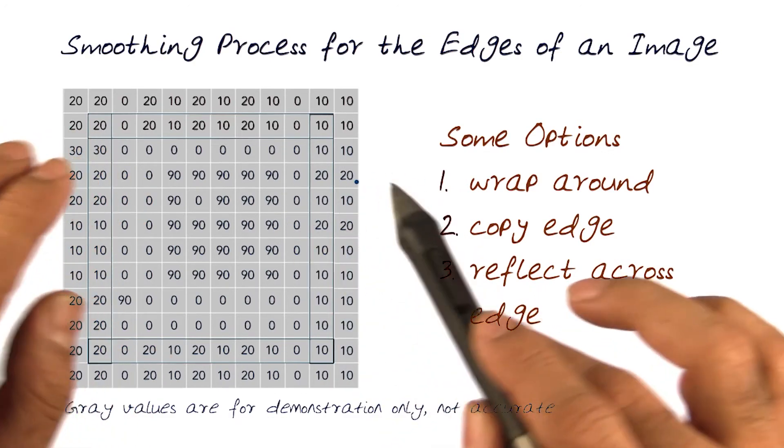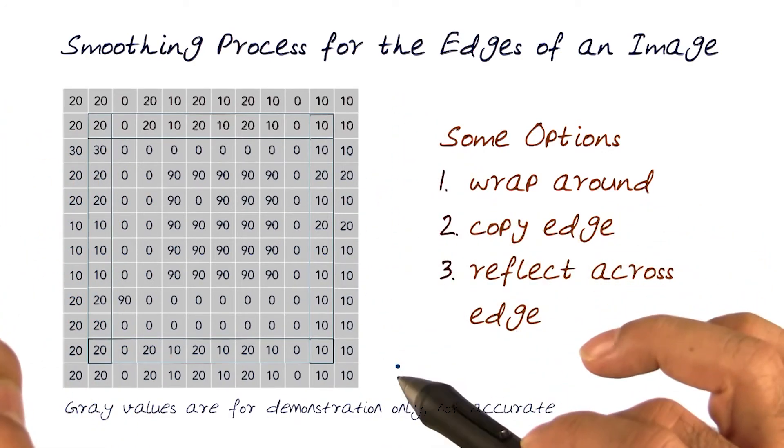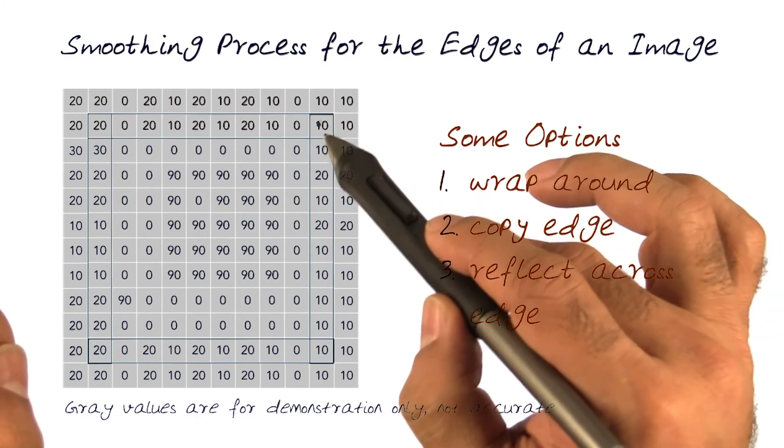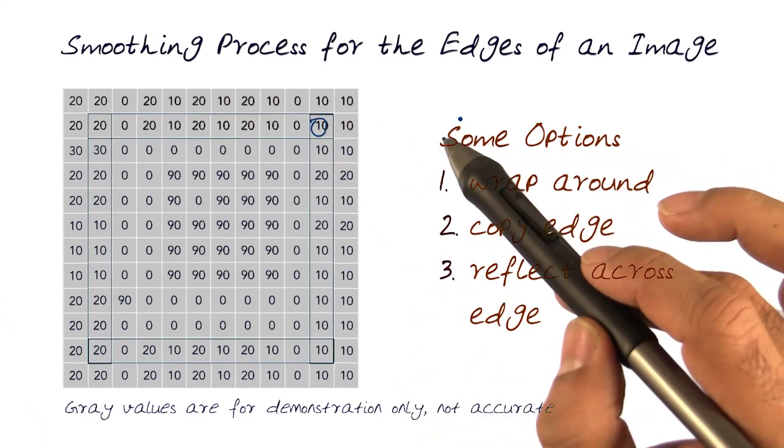Again, many different methods could be used. What we're really trying to do is figure out how to increase the edge size so we can basically do computation of this and create a newer image from it.